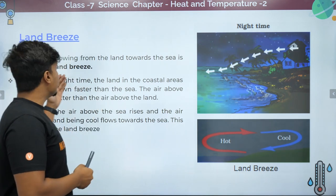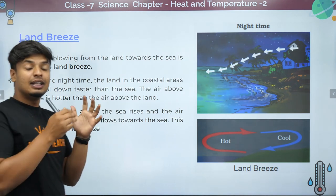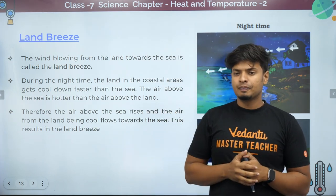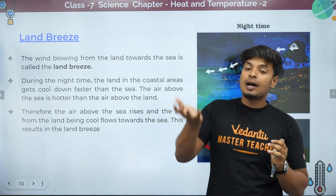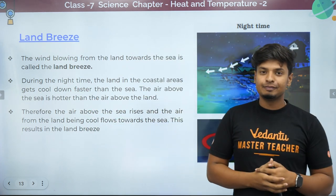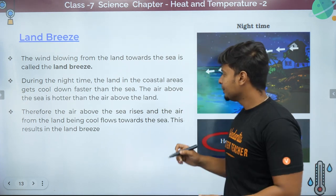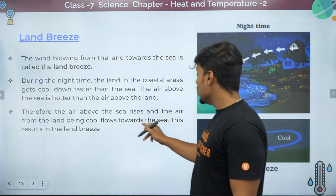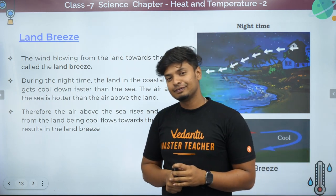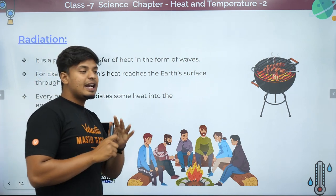Land breeze is the opposite — it happens during the night. The wind moves from the land towards the sea. At night, land in coastal areas cools down faster, while the ocean takes more time to cool down. Therefore, air above the sea rises up, and air from the land goes towards the sea. The cool air is coming from the land, so it's called land breeze.